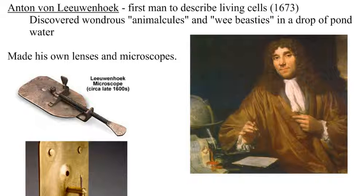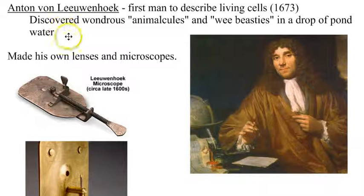The next person in our history here is Anton van Leeuwenhoek, and he was the first man to describe living cells. He wrote that he discovered wondrous animacules and wee beasties in a drop of pond water. He looked at all kinds of things — scrapings from his teeth, pond water, even human sperm.